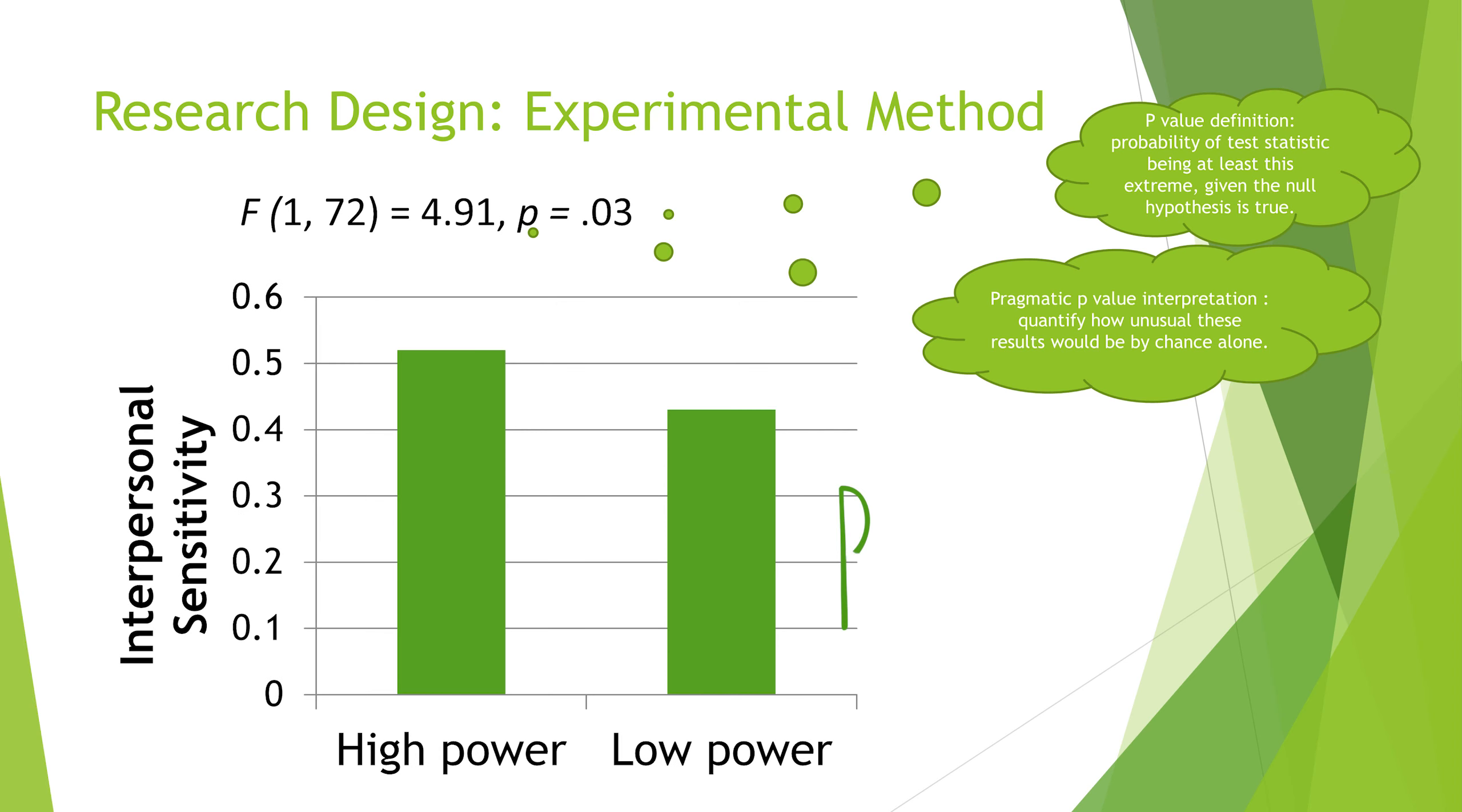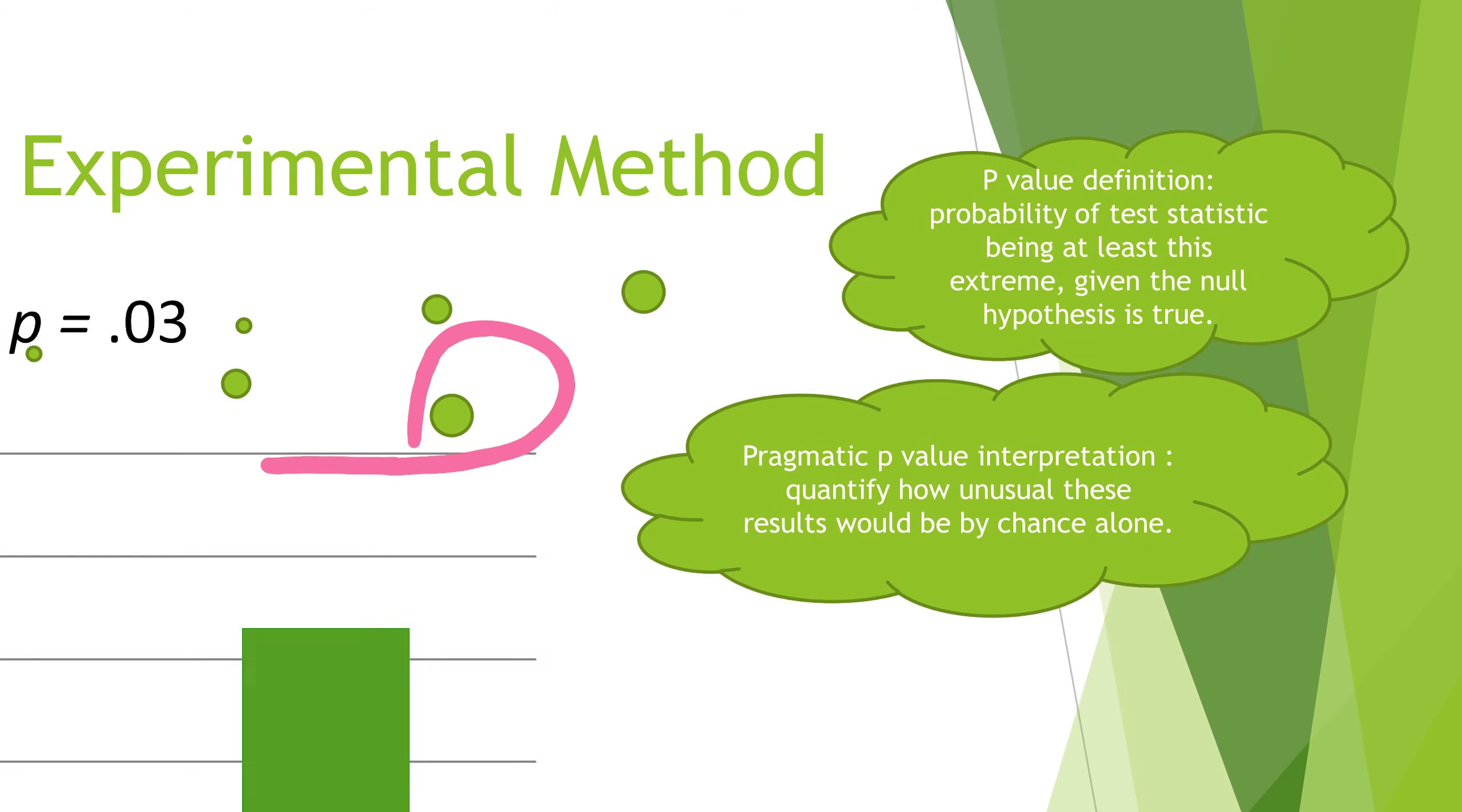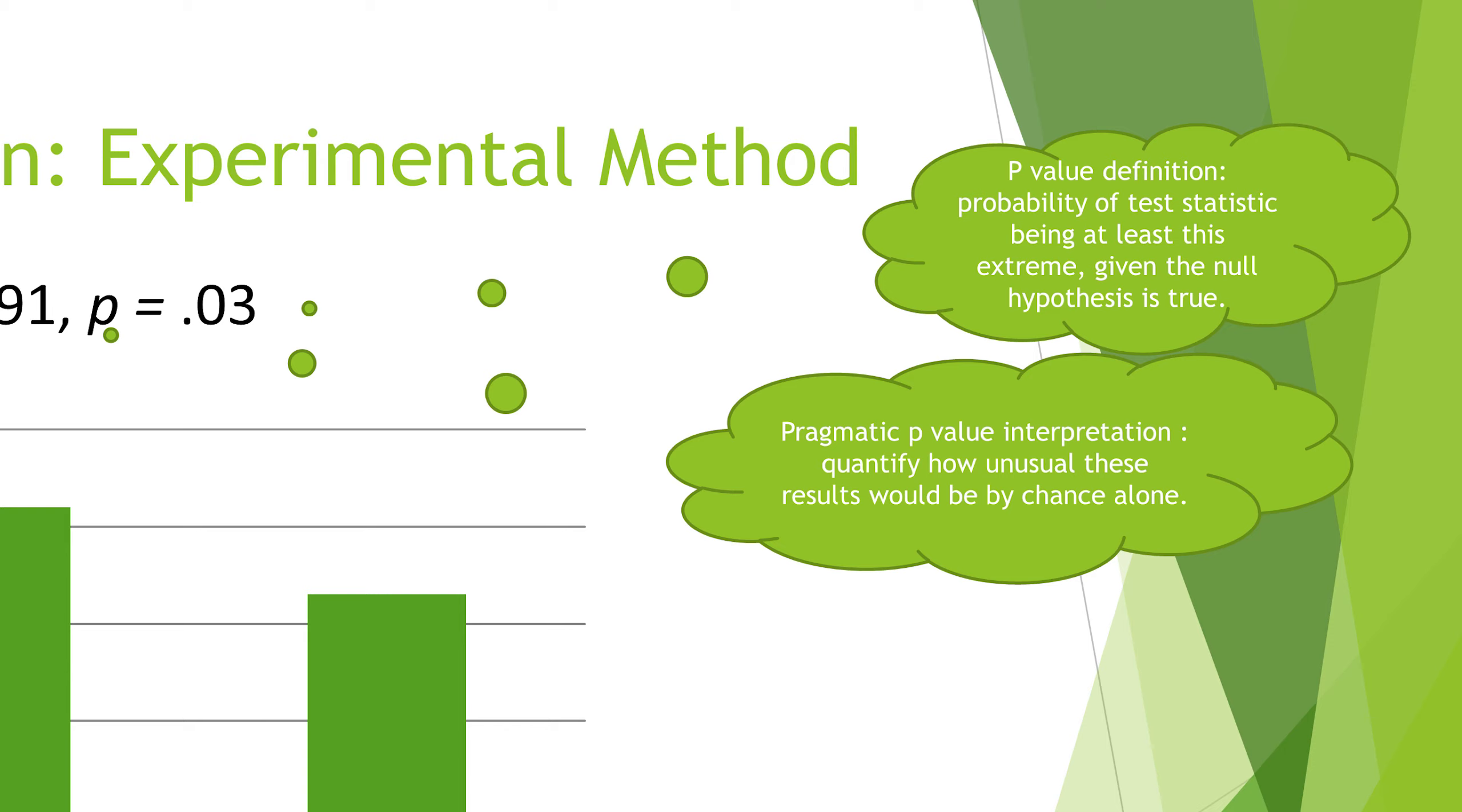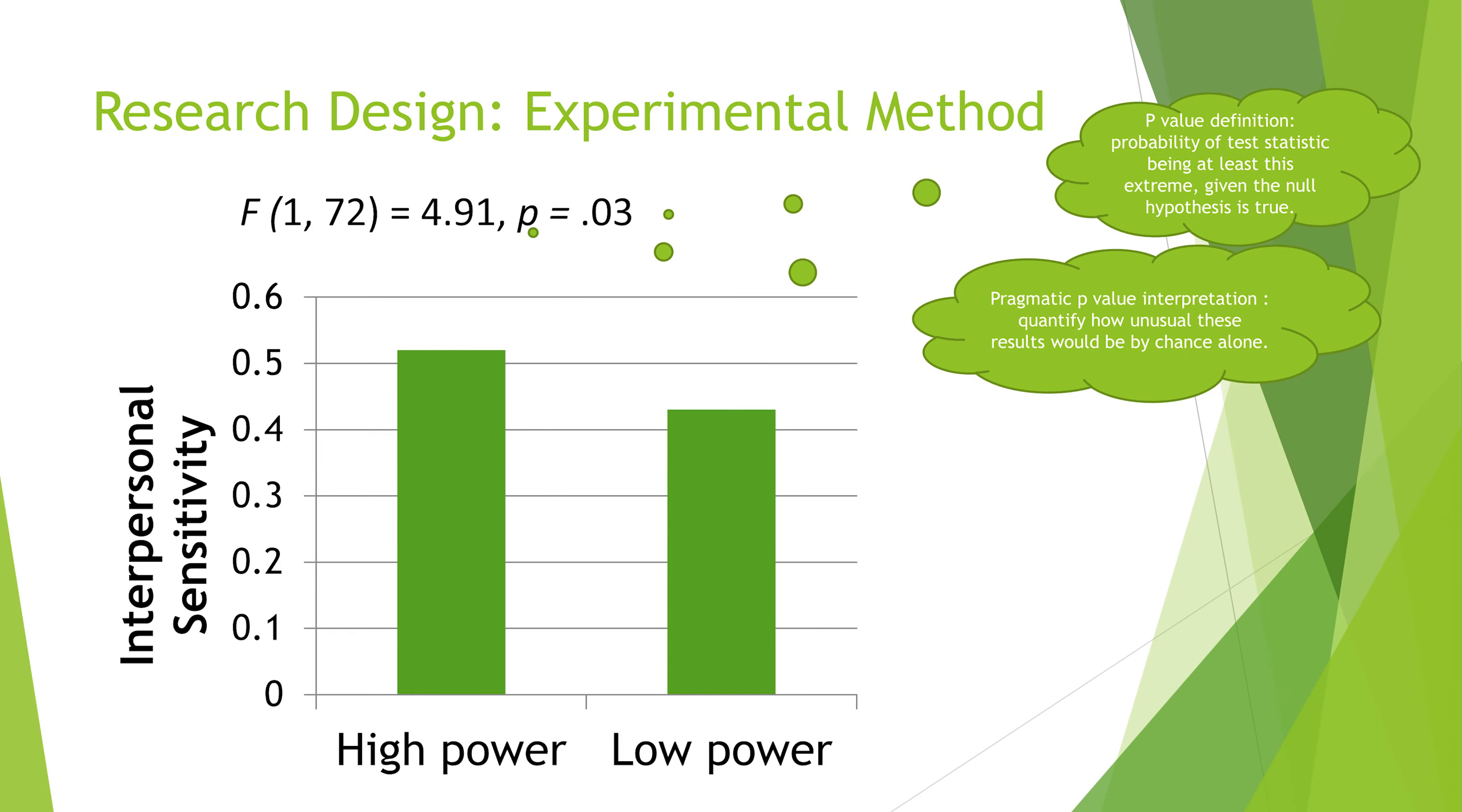You can think about it as a way to quantify how unusual these results are—how unusual that would be by chance alone. And in psychology, we have a rule of thumb of p less than 0.05. This p is a probability, and probability of less than 0.05 means we'd only expect to see this situation by chance 1 in 20 times. So, out of 20 experiments, we would expect 1 to have been by chance.